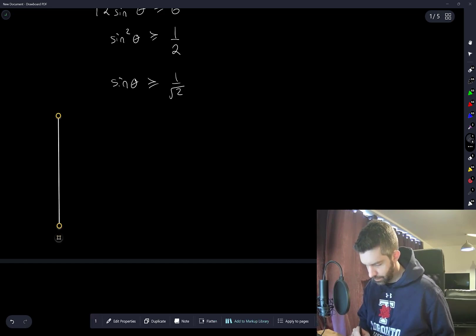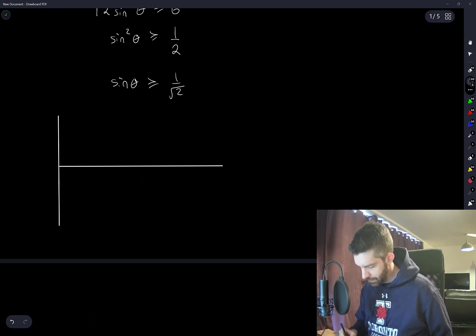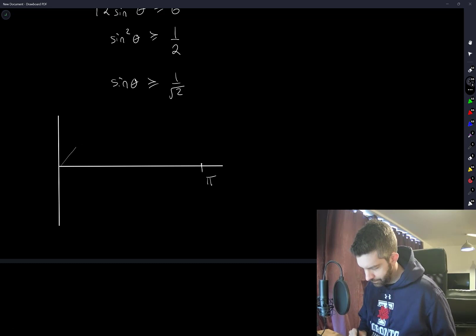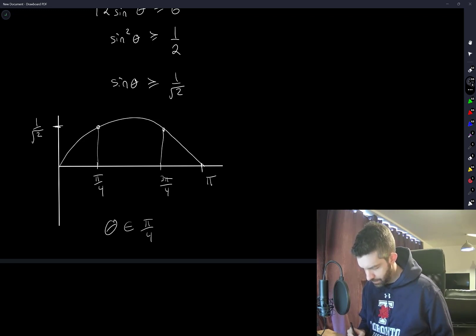If I plot what the graph of sin(θ) looks like between 0 and π, something like this, we get this hump. And at π/4 and 3π/4, this is when we have 1/√2. So I think the answer should be theta is between π/4 and 3π/4. I hope that's one of the answers in the question. It is.